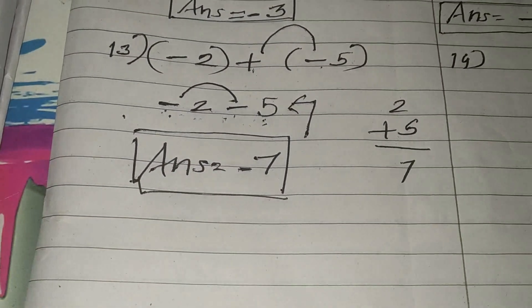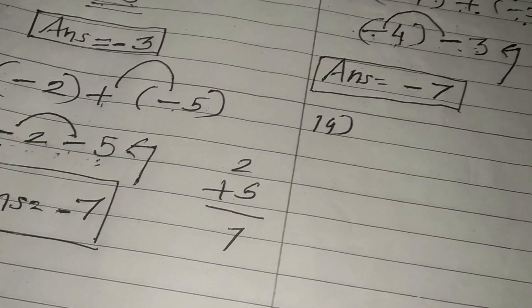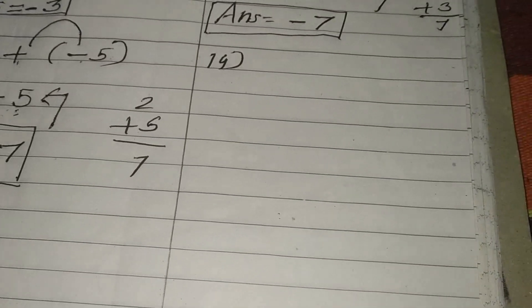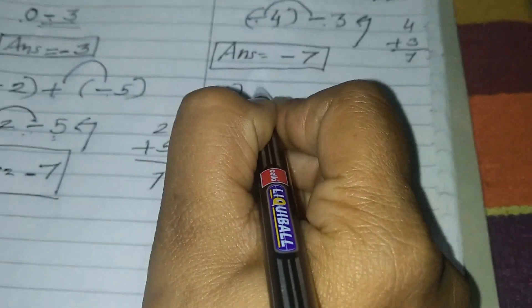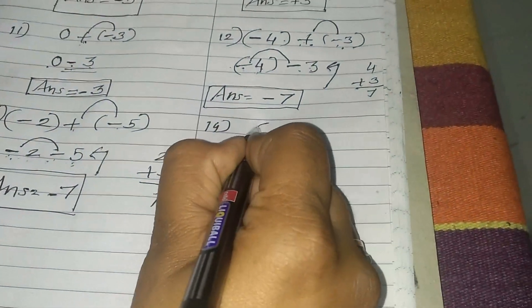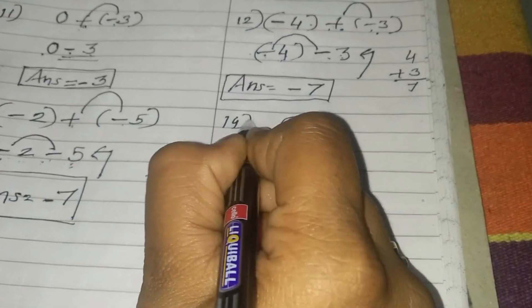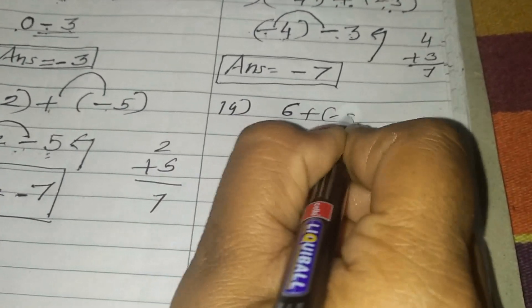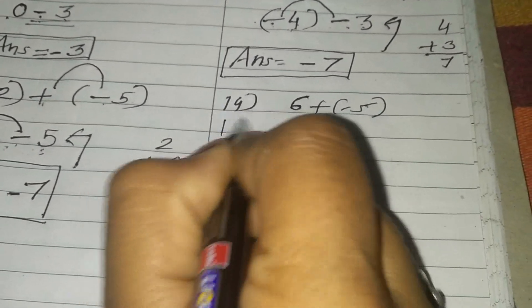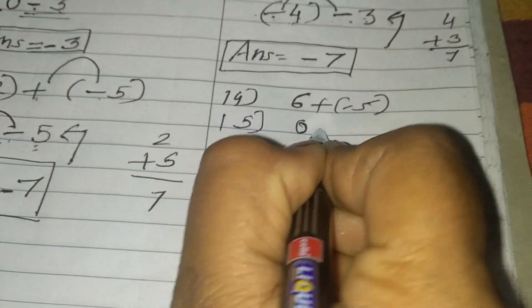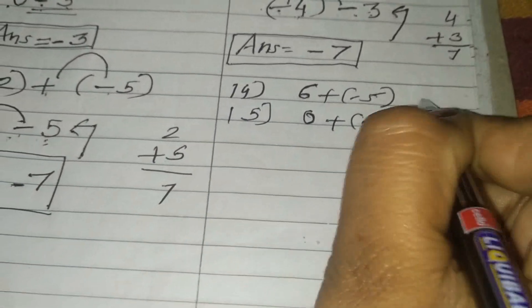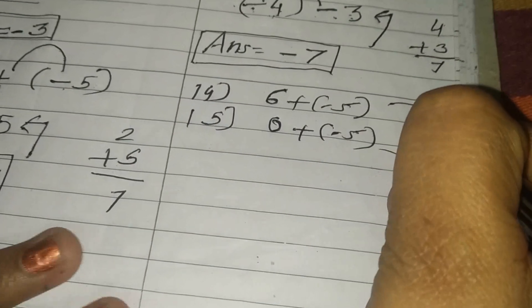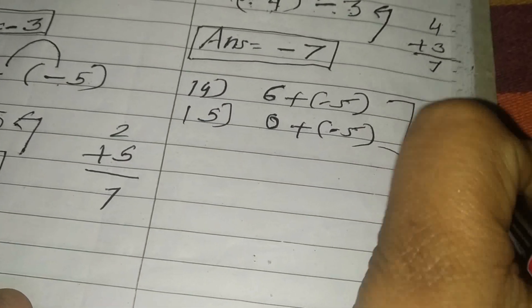Hope you understand well. In your notebook, you write better than me also — in a suitable way, use a scale and ruler, make boxes nicely. Use all your skill. The next one is number 14: 6 plus minus 5, and number 15 is 0 plus minus 5. These 2 you will please solve as homework.